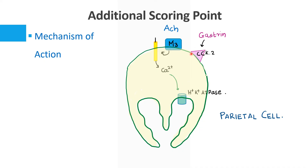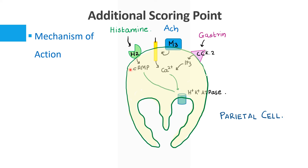Gastrin acts on the CCK2 receptor and acts via IP3 as the second messenger, which again increases calcium levels and activates the H+/K+ ATPase pump. Histamine acts on H2 receptors, where the second messenger is cAMP. cAMP increases protein kinases which in turn increase the activity of the H+/K+ ATPase pump.